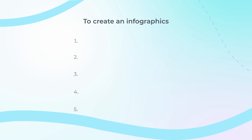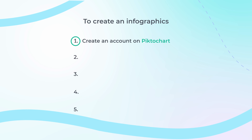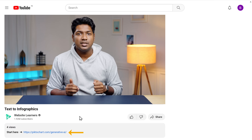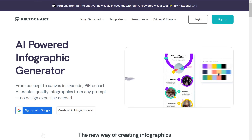To create the infographics, we are going to do 5 steps. The first step is to create an account on PictoChart. This AI tool can create awesome infographics from your text, so just click the link in the description and sign up using a Google account.